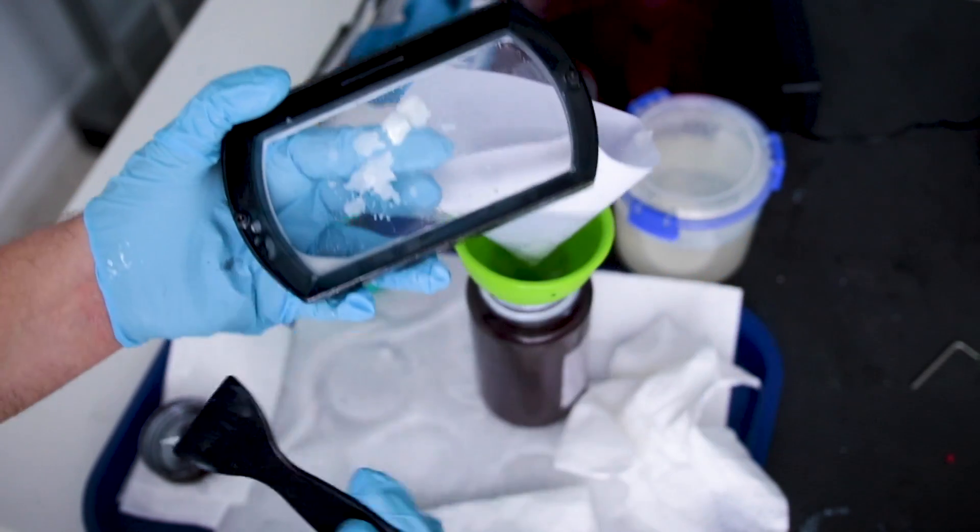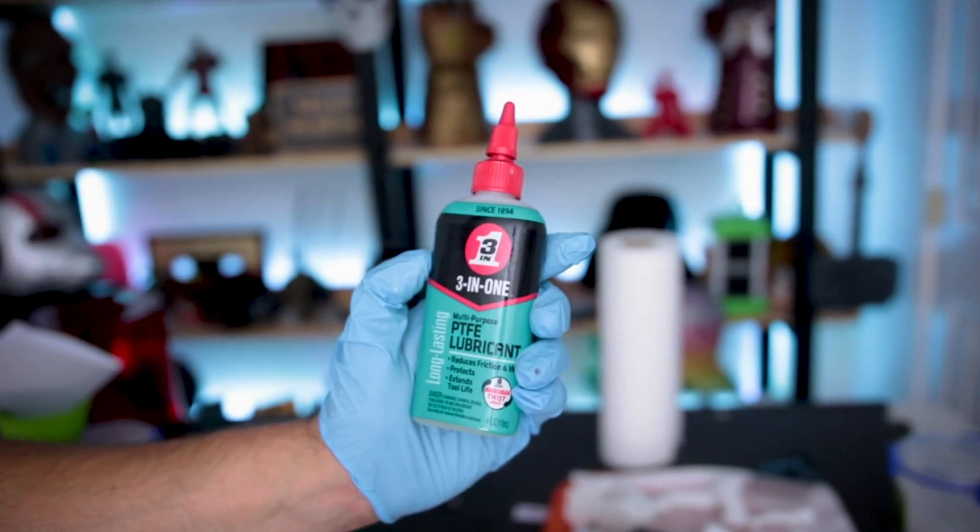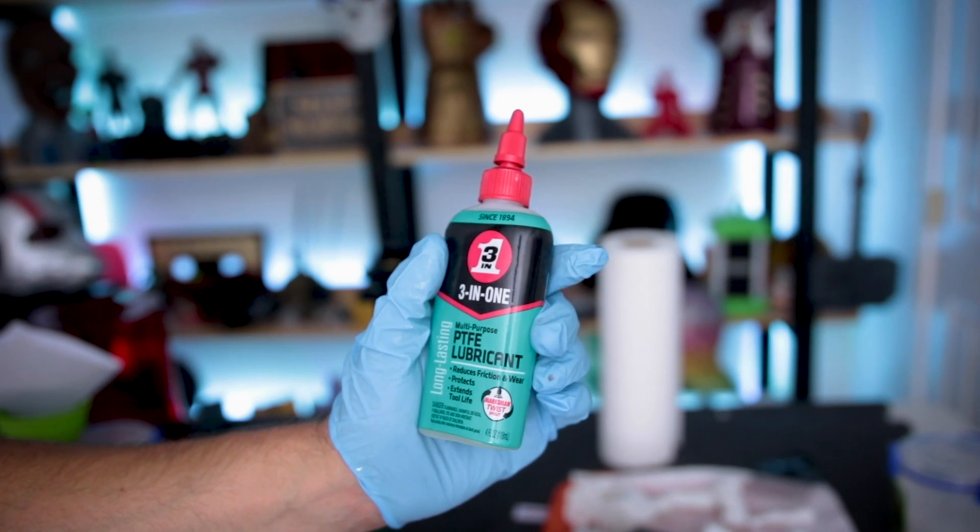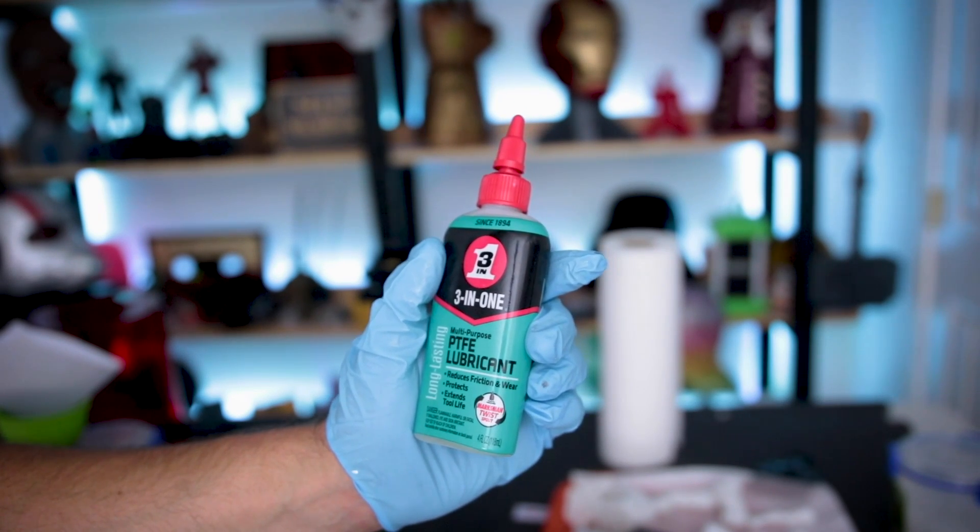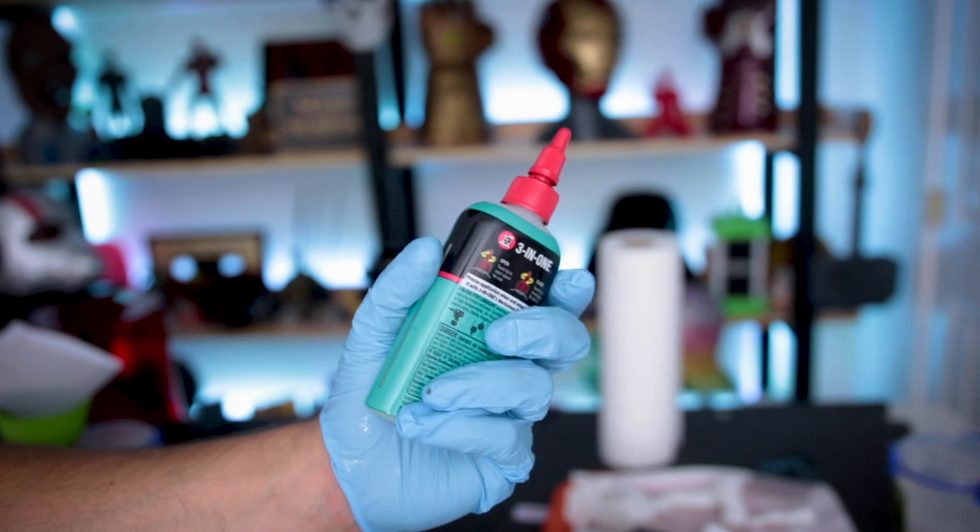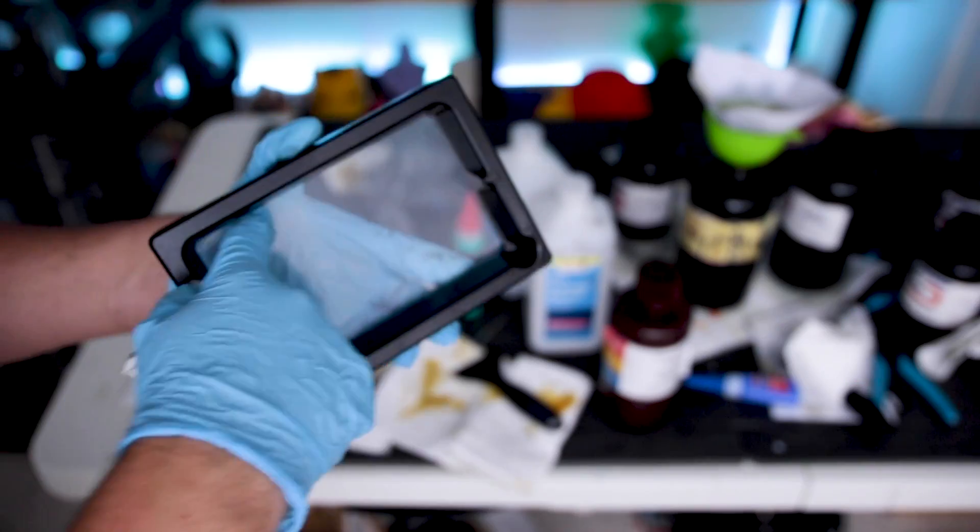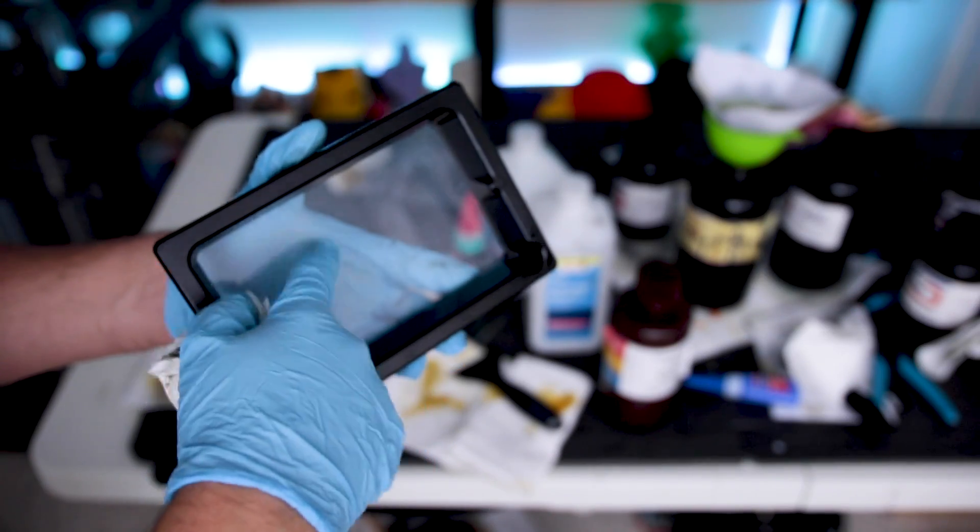This protects your plastic screen so you don't poke a hole through it or anything like that. This again is 3-in-1 PTFE lubricant. You can get this at Home Depot, Lowe's, Walmart, that sort of place. I'm sure there are other variants of this as well. Oh, nice and slippery.